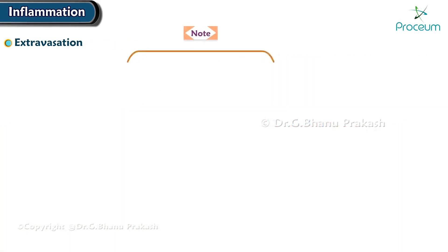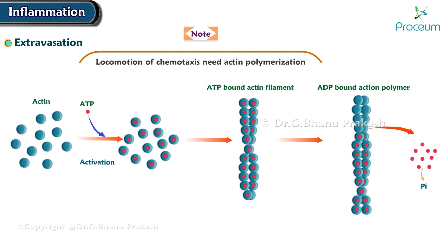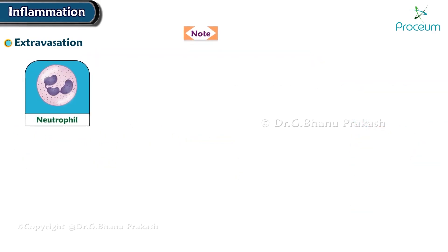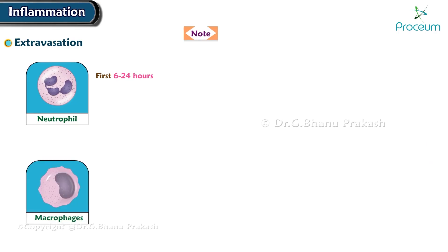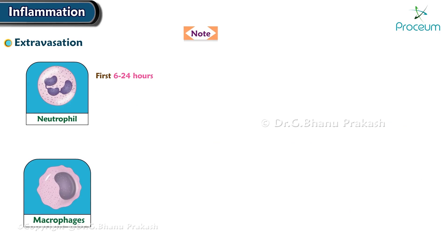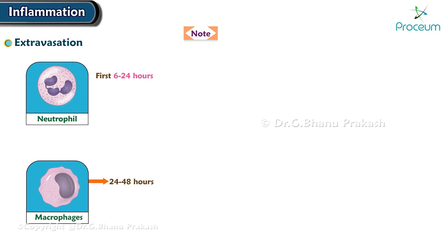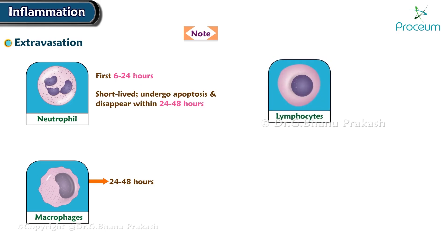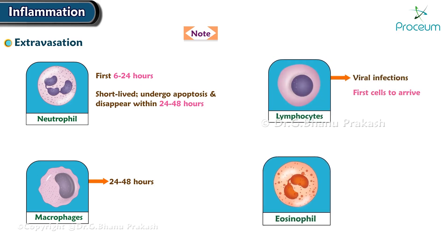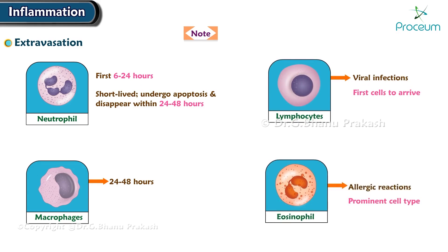Note that the locomotion of chemotaxis requires actin polymerization. In most forms of acute inflammation, neutrophils predominate in the inflammatory infiltrate during the first 6 to 24 hours and are gradually replaced by monocyte-derived macrophages over 24 to 48 hours. After entering the tissues, neutrophils are short-lived; they undergo apoptosis and disappear within 24 to 48 hours. In viral infections, lymphocytes may be the first cells to arrive. In allergic reactions, eosinophils may be a prominent cell type.